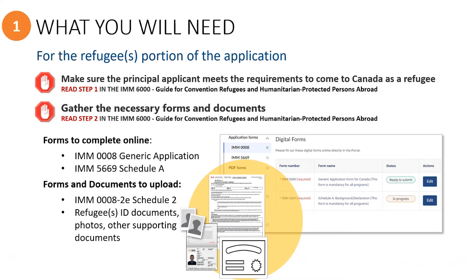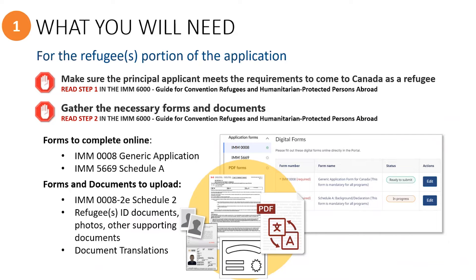The refugee's ID documents, photos, and other supporting documents will need to be saved as digital files, which will be uploaded into the PR Portal application. These digital files will need to include any translations for documents which are not already in English or French. If you do not know how to combine the translated documents into the same digital file as the original document, you can watch the tutorial video on how to merge PDF files together.